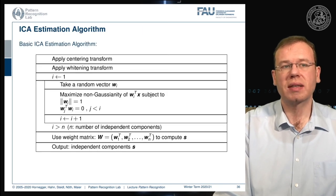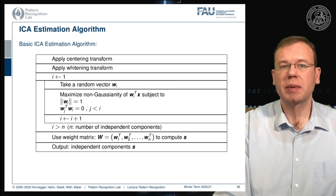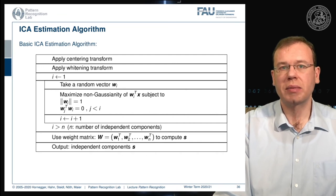To construct an ICA algorithm: apply a centering transform, then a whitening transform, then iterate. Take a random vector wi and maximize the non-Gaussianity of wi-transpose x, subject to the vector having unit length and being orthogonal to all other wj. Increment the iteration counter and repeat for all independent components. Once the weight matrix is determined, compute the independent signals using this transform to obtain the final independent components s.